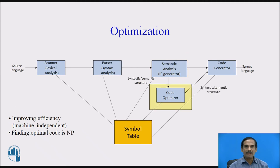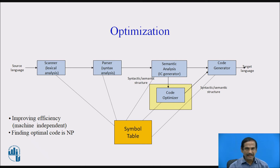Code optimization refers to the improvement of the intermediate code created in the previous phases. The intermediate code may be optimized by certain methods called optimization techniques. We improve intermediate code with global and local operations like removing dead code, constant folding, loop invariance, etc., which results in faster running machine code.